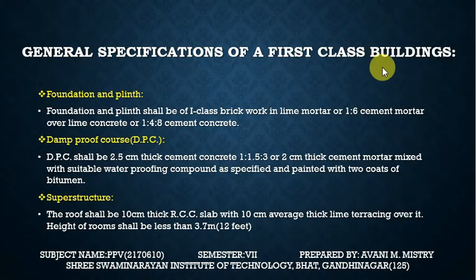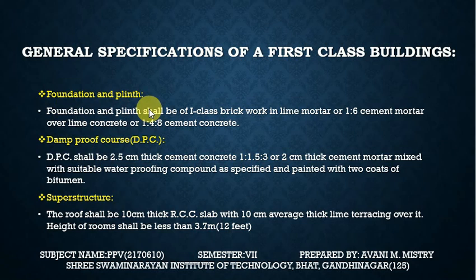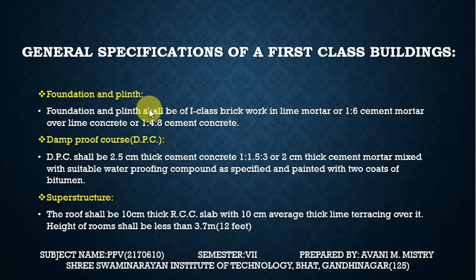General specification of the first-class building: Foundation and plinth shall be first class brickwork in lime mortar or 1:6 cement mortar over lime concrete of 1:4:8 cement concrete — proportions are specified. DPC shall be 2.5 cm thick cement concrete 1:1.5:3 or 2 cm thick cement mortar mixed with suitable waterproofing compound as specified and painted with two coats of bitumen.